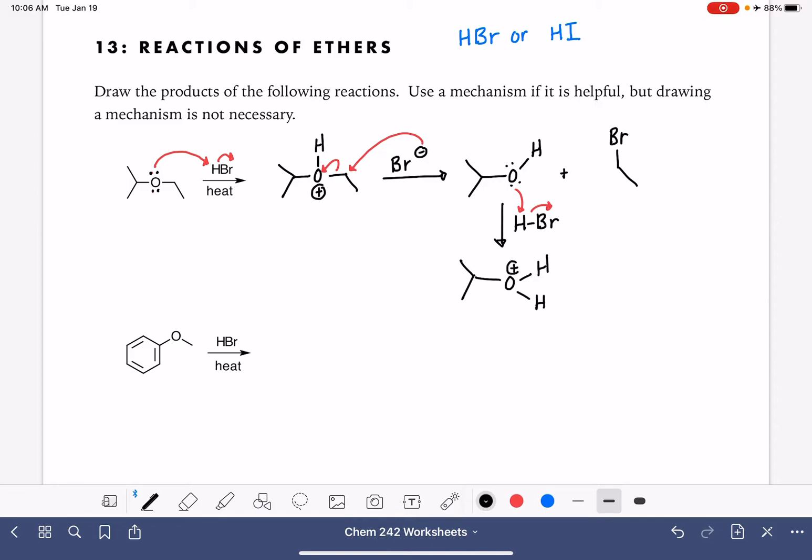Now this really looks like an SN2 reaction. And our bromide ion is going to attack the carbon attached to the oxygen and give us our second product of the reaction.